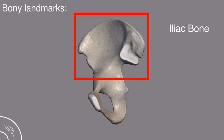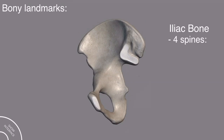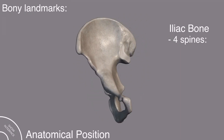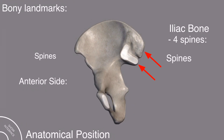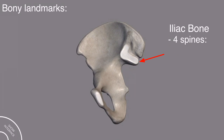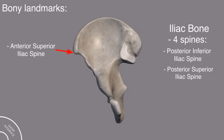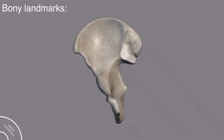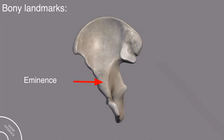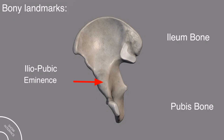In the iliac bone, we have four spines and we have named them according to their location. Since this is the anatomical position of the hip bone, these two spines are on the anterior side and these two spines are on the posterior side. This is called the posterior inferior iliac spine and above this is the posterior superior iliac spine. On the anterior side, this one is the anterior superior iliac spine and this is the anterior inferior iliac spine. On the hip bone, you can clearly see there is an eminence called the iliopubic eminence, because this eminence is present between the ilium and the pubis.